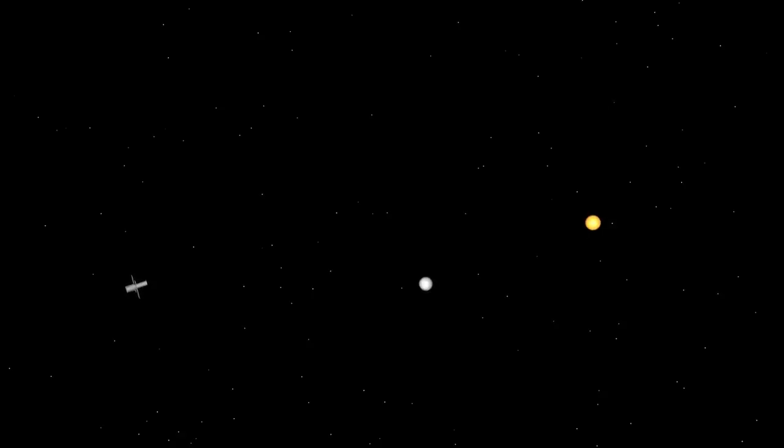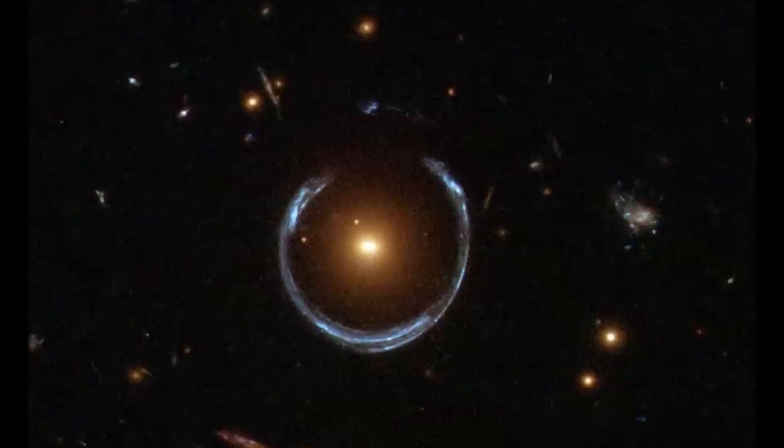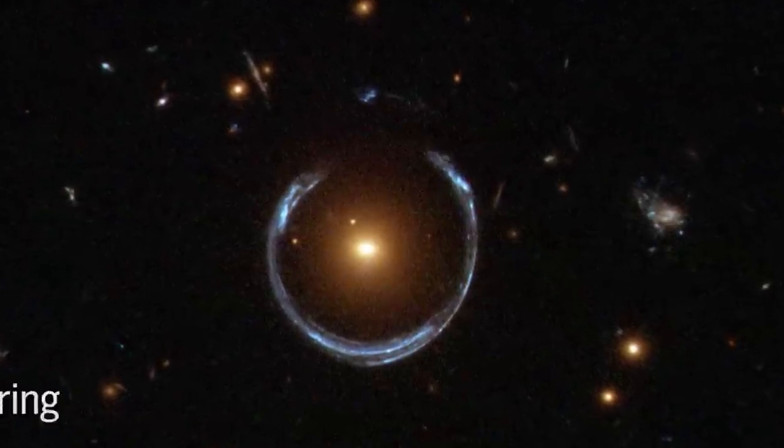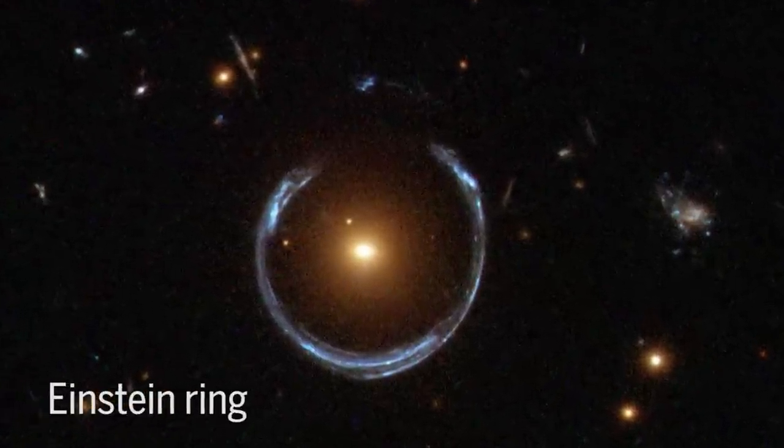So when a star passes between us and a more distant star, we should see the distant star shift position or, in the case of perfect alignment, become distorted into a perfectly circular ring of light, a so-called Einstein ring.